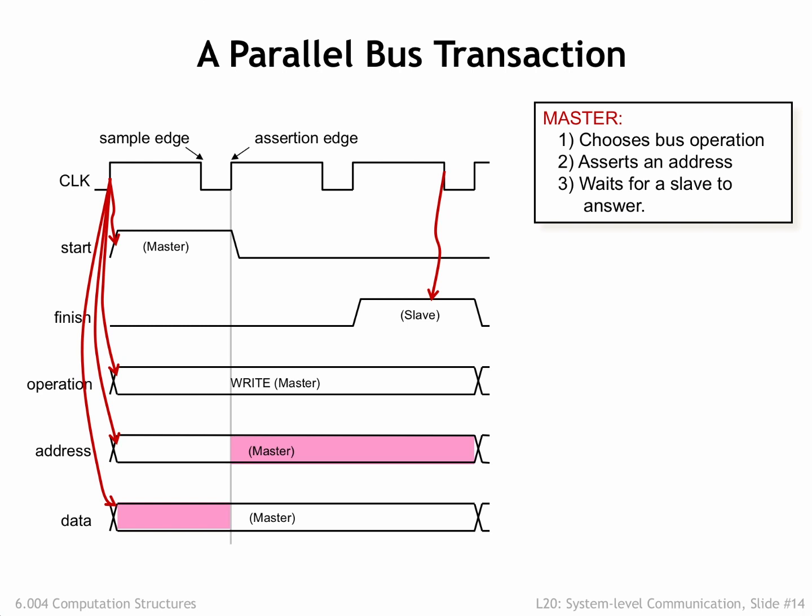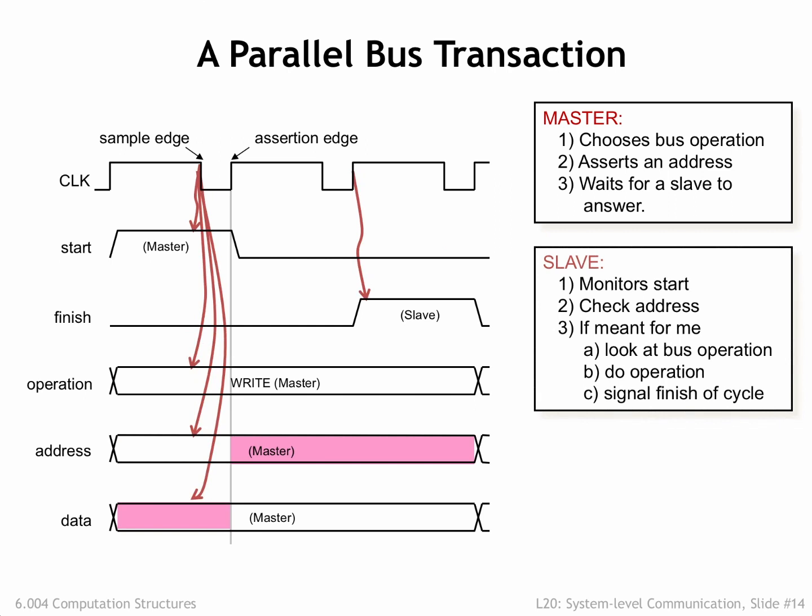Most buses provide a mechanism for transferring ownership from one component to another. The master sets the bus lines to indicate the desired operation, the address of the recipient, and in the case of a write operation, the data to be sent to the recipient. The intended recipient, called the slave, is watching the bus lines looking for its address at each sample edge. When it sees a transaction for itself, the slave performs the requested operation using a bus signal to indicate when the operation is complete. On completion, it may use the data wires to return information to the master.